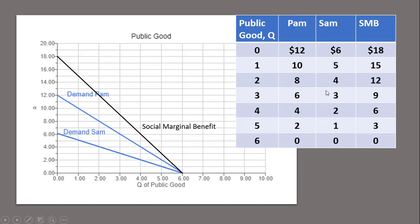I have a table here to help us with these calculations. The easiest thing to do is start with a quantity of zero. At a quantity of zero, the vertical intercept for Sam is $6 and the vertical intercept for Pam is $12. So adding those two up — 12 plus 6 — we get a point on the market demand for the public good: $18.